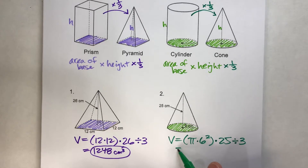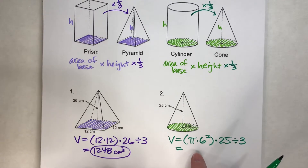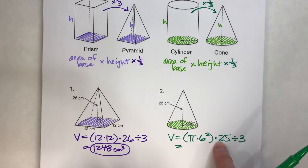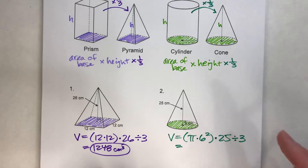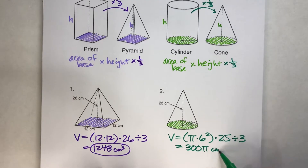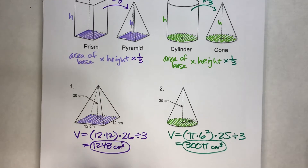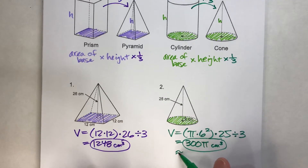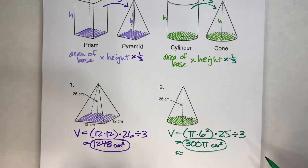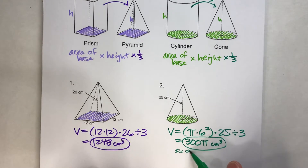Because there's pi in the answer and it will be irrational, I'll give two answers. For the exact answer in terms of pi: 6 squared times 25 divided by three gives 300, so the exact answer is 300π centimeters cubed. For the approximate answer, I multiply 300 by 3.14 and get about 942 centimeters cubed.